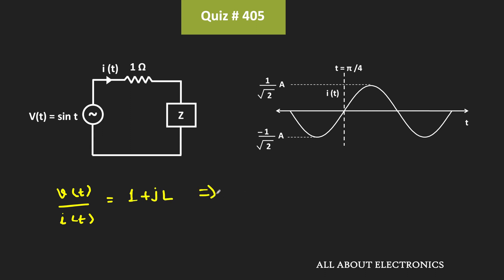So in the phasor form, let's say this voltage is equal to V — it will be written as the amplitude followed by the phase. Likewise, let's say the current in the circuit is equal to I — it will be written with the amplitude and phase. And this 1 + jL is the impedance of the given circuit. Now typically, the impedance is represented with the symbol Z, but here since Z is already used for this element, I am representing this impedance with another symbol — let's say that is equal to A. So this impedance can also be written with its amplitude and phase.